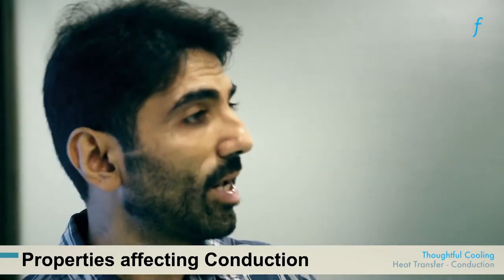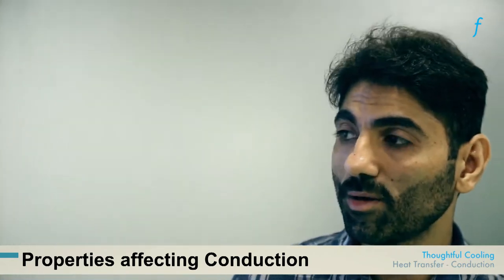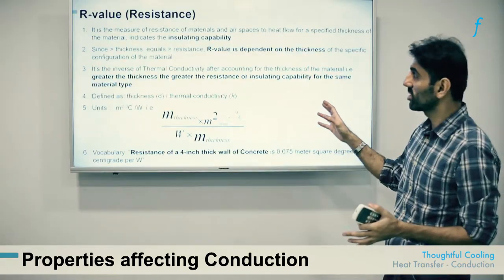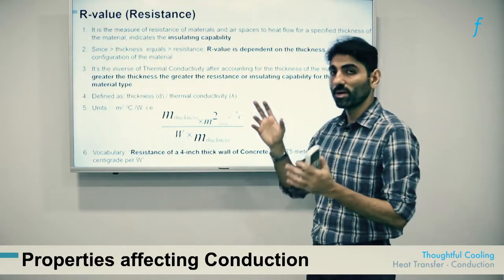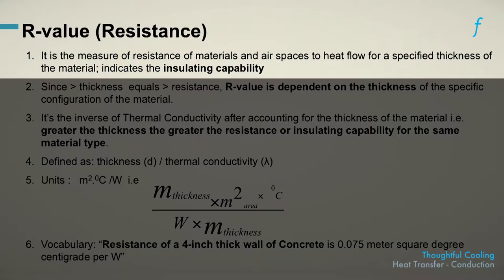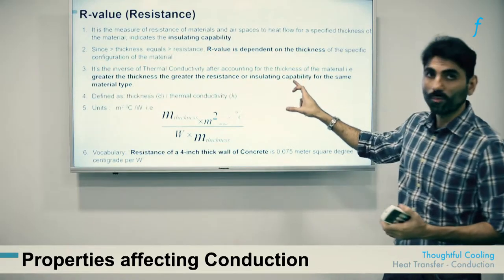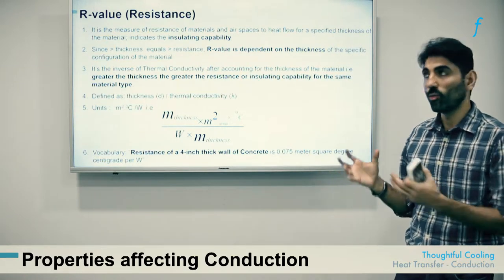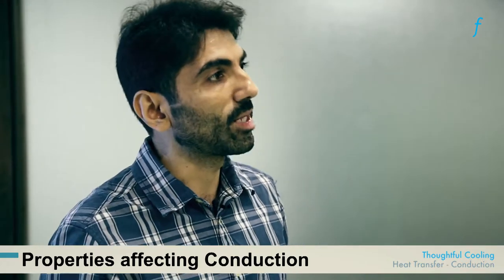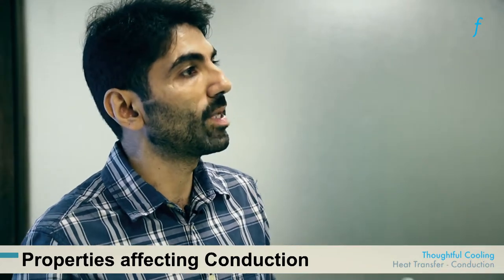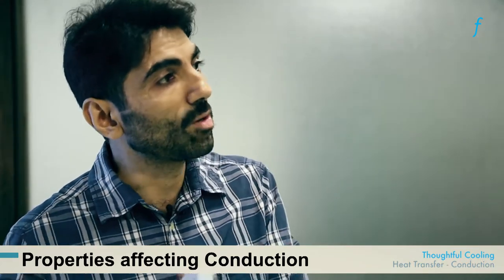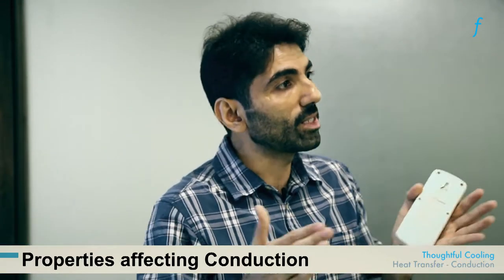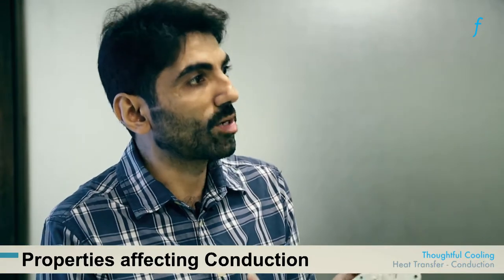The second property, related to but not equivalent to thermal conductivity, is called resistance. It is the measure of resistance of a material, or air spaces if there is a gap, to heat flow for a certain thickness. This property is therefore dependent on the total quantity of the material available, meaning the more the quantity of material, the higher the resistance compared to a lesser quantity of that same material.